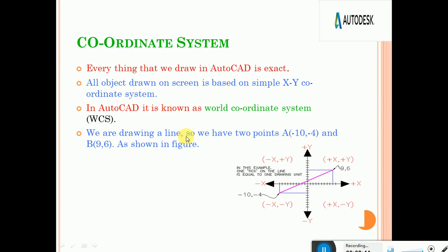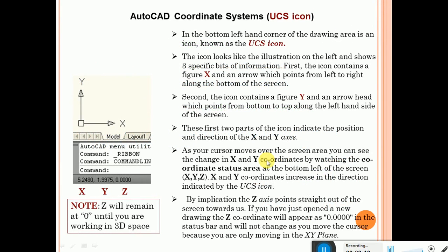We have to draw a line — we have two points. We want to draw a line from minus 10 comma minus 4 to 9 comma 6. This coordinate is a Cartesian Coordinate System. Minus 10 comma minus 4 is a Cartesian Coordinate System, and 9 comma 6 is also a Cartesian Coordinate System. We can directly give the AutoCAD Coordinate System. The World Coordinate System is already predefined.